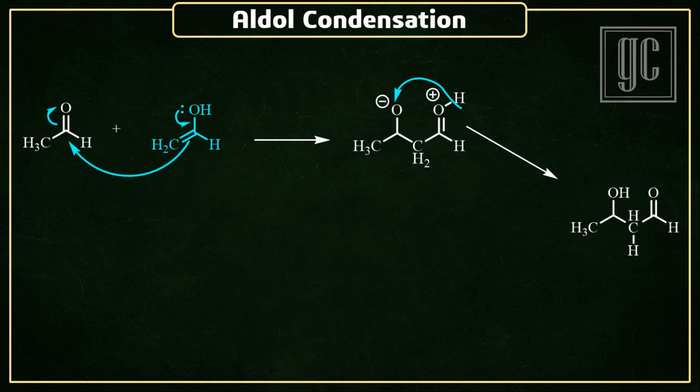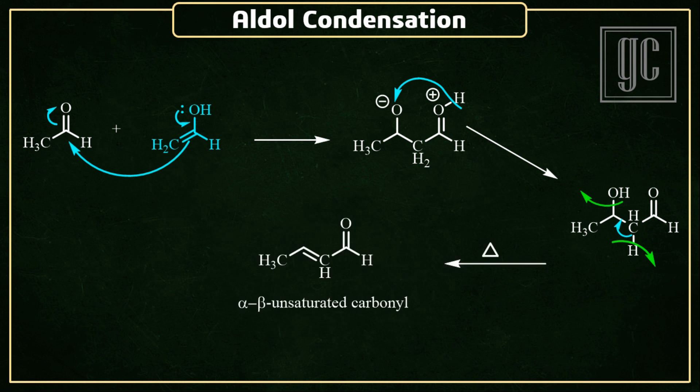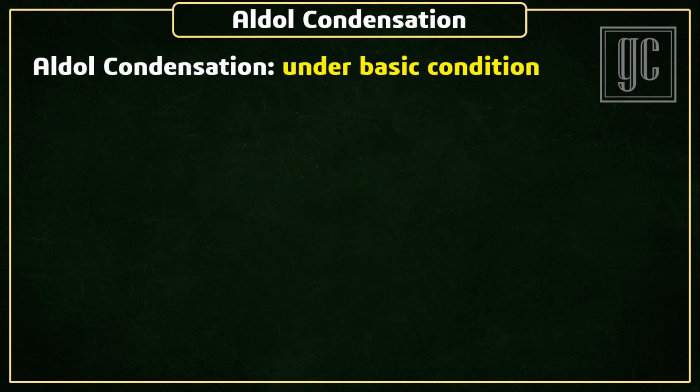Next is an important step: the beta-hydroxyl carbonyl, in the presence of alpha hydrogen, undergoes beta elimination in order to make a more stable molecule. Here, one alpha hydrogen and the beta-hydroxyl group leave the molecule, and a carbon-carbon double bond is formed. The final product is an alpha-beta unsaturated carbonyl compound.